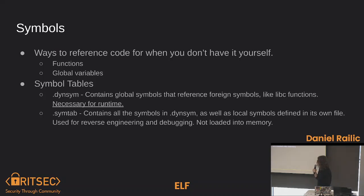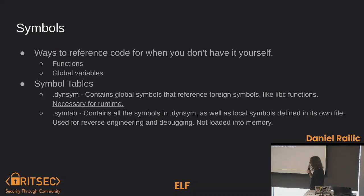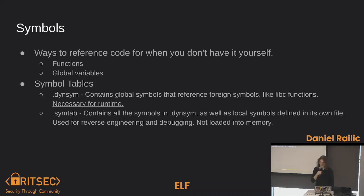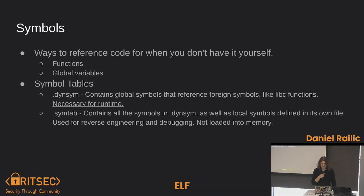There are two symbol tables. The dynamic symbol table contains global symbols that reference foreign symbols like libc functions. Whenever you compile something, you're not statically compiling libc into it — you're linking it when you compile. So it has symbols saying we need these functions but they're over there, and we're going to reference them by symbol because we don't actually have them in our own file. Then we'll go through the relocation process to see how that actually happens.